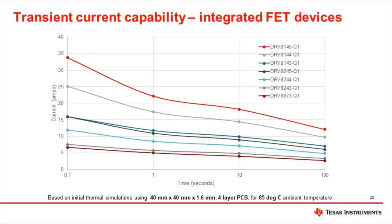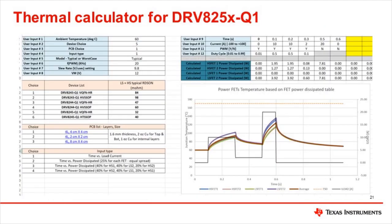External factors such as board design and ambient temperature also affect thermal calculations. In general, high currents are possible for short duration and longer durations with lower currents are also fine. On the product page for the DRV8245Q1 and other devices in this family, you can find a thermal calculator that estimates the internal junction temperature based on several factors, including the current profile and type and size of printed circuit board. You can use this calculator to see which of the devices is the best fit for your specific application.